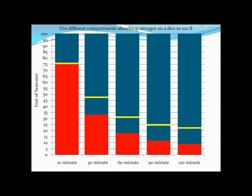Of course, we could stay down longer, and all that would happen is that our 10-minute compartment would exceed its M value. Then the 30-minute compartment exceeds its M value, then the 60-minute, then the 90-minute, and it won't be long before the 120-minute compartment exceeds its M value too. This shows us that all compartments can exceed their M value — they can hold more nitrogen than their M value — but if you allow that to happen, you will have to do a series of decompression stops to avoid DCS.